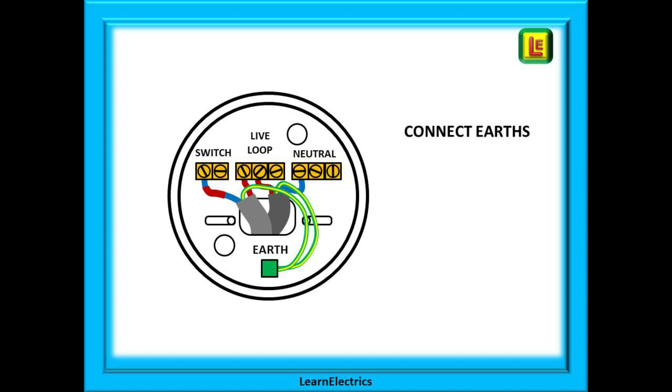We will have two earths as well, sleeve them separately and connect them together in the earth terminal. Do not leave them as bare copper. And finally, if not already in place, connect the two lamp wires.